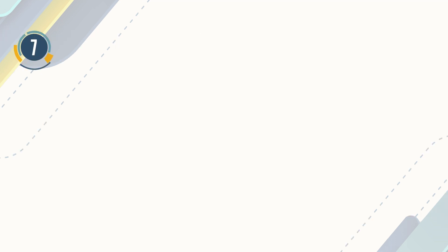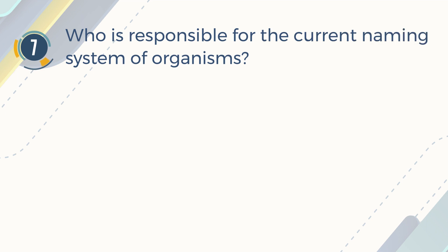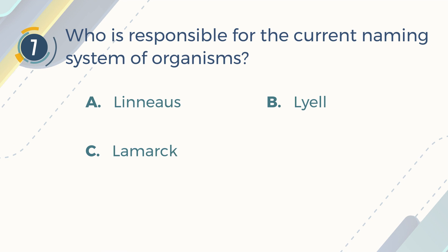Number 7. Who is responsible for the current naming system of organisms? A. Linnaeus. B. Lyle. C. Lamarck. D. Linus.